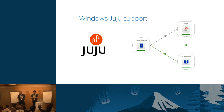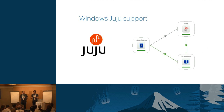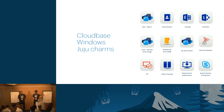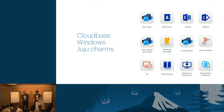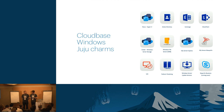We are big fans of Juju — it's the easiest way to deploy workloads on top of an OpenStack cloud. It works on Linux and it works on Windows, and we have a ton of CloudBase Windows charms: Active Directory, Hyper-V, Exchange, SharePoint, Windows File Server, SQL Server, SQL Server Always On, VDI, Failover Clustering, and Skype for Business. We have both open-source charms freely available and commercial offerings.